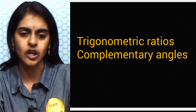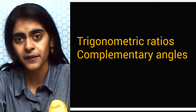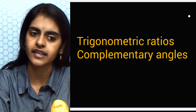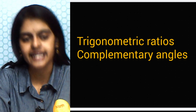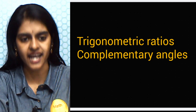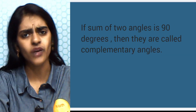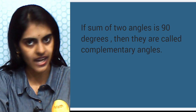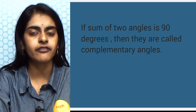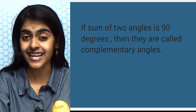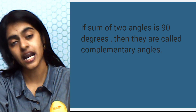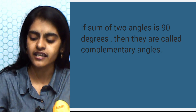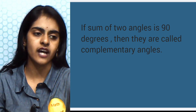Now let us move on to this concept: trigonometric ratios of complementary angles. First, tell me — what is a complementary angle? From class 7 and class 9 we have studied that any two angles whose sum is 90° are called complementary angles. If the sum of two angles is 90°, that pair of angles is called complementary angles.